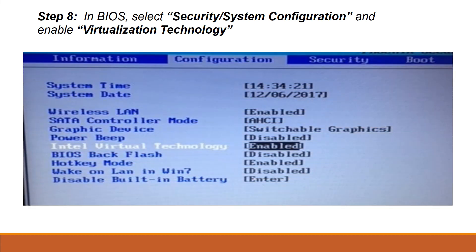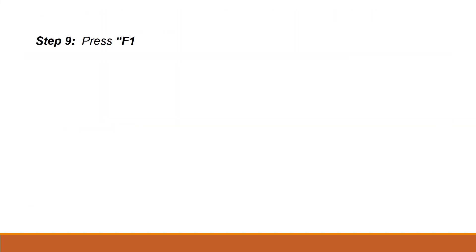In the hardware models, the Security tab is the system configuration tab. The virtualization technology status is shown in the system configuration. If it is disabled, click and enable it. Once virtualization is enabled, press the F10 key.